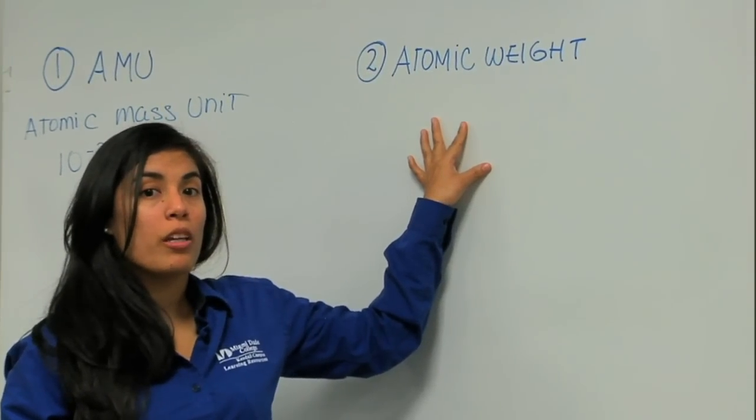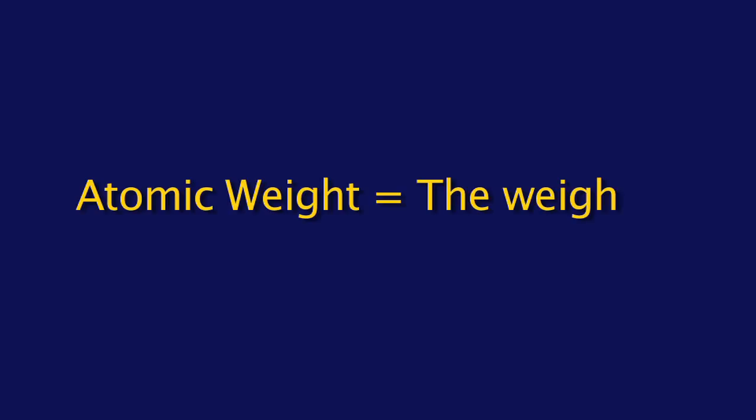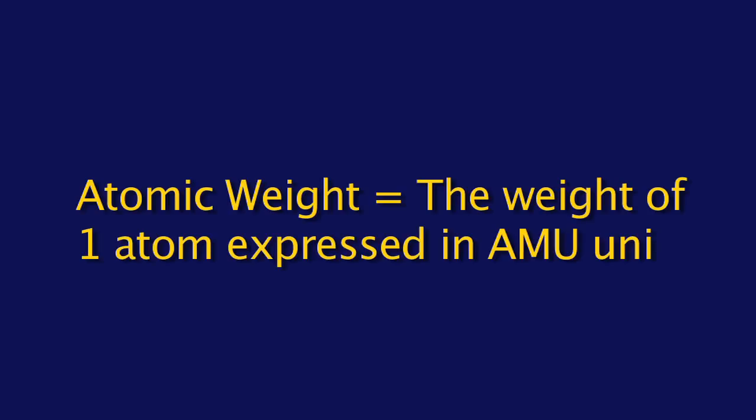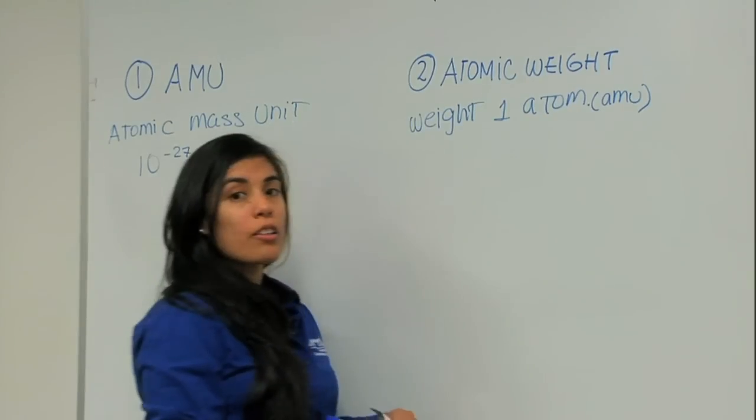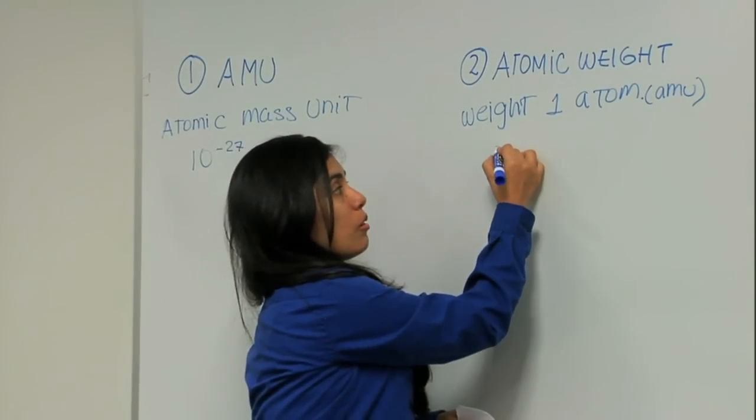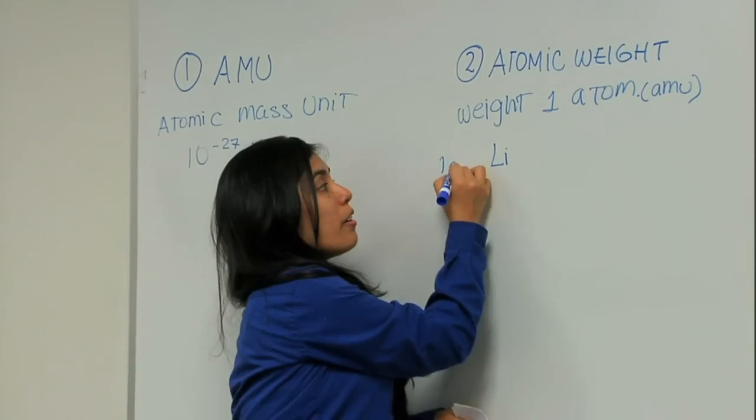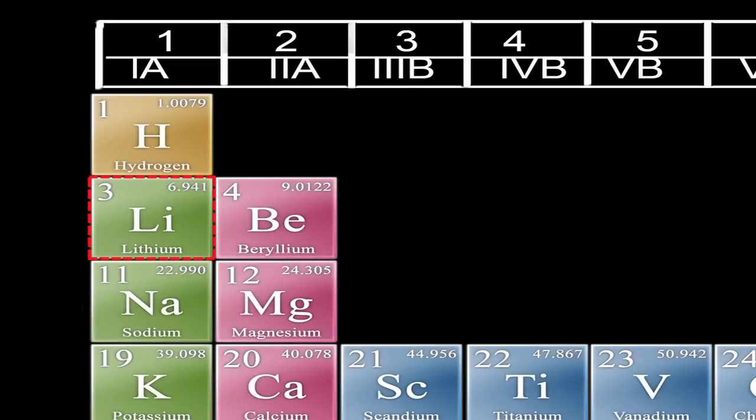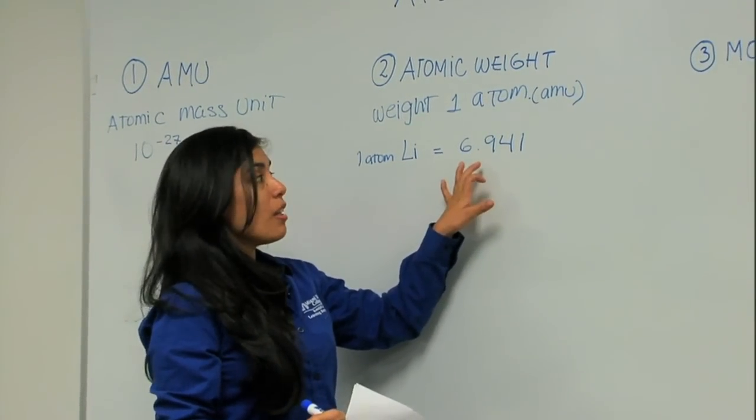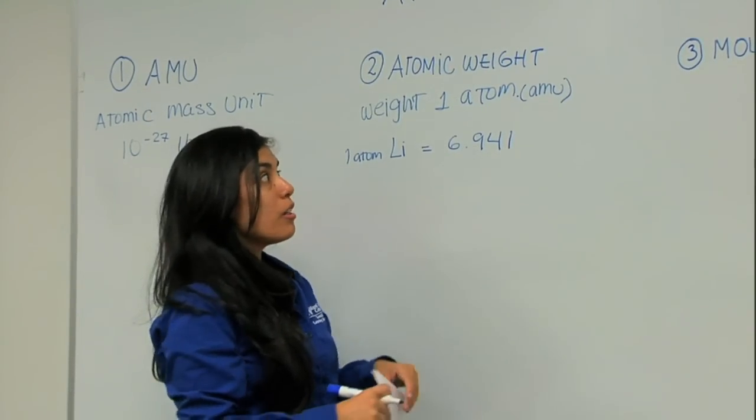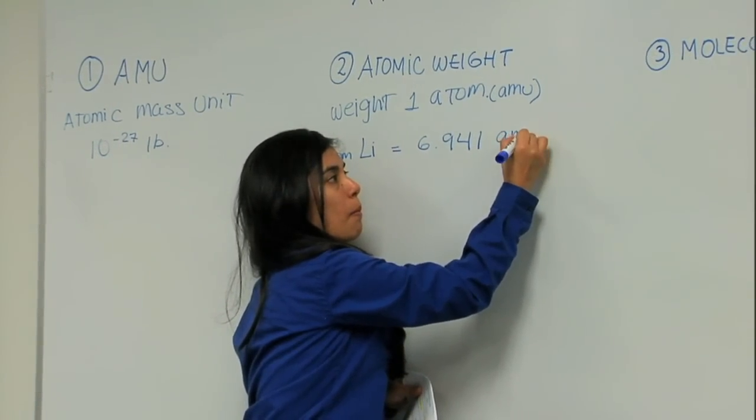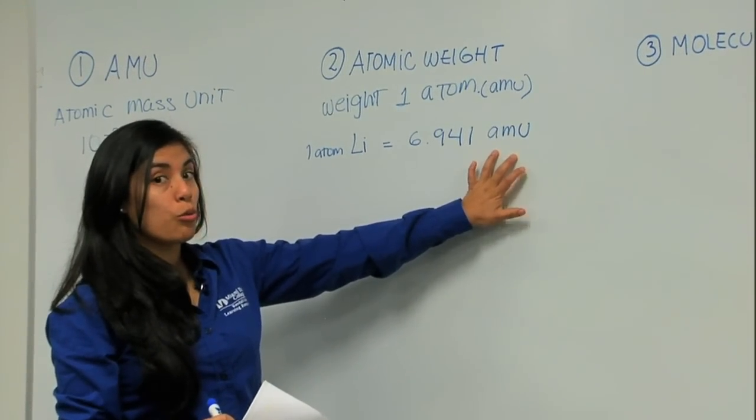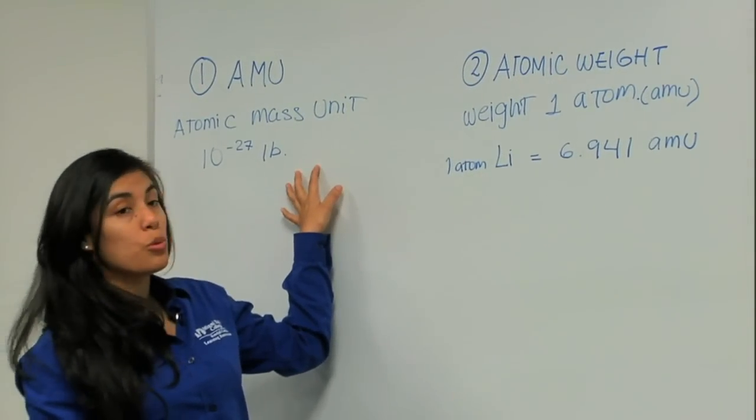Now that we know this, we can know what atomic weight is. Atomic weight is the weight of one atom expressed in AMU units. So, let's imagine about lithium, one atom of lithium. If we go to our periodic table, we will see that lithium has a mass of 6.941. So one atom of lithium will weigh 6.941 AMU, because that's the unit that we use every time we refer to atoms.